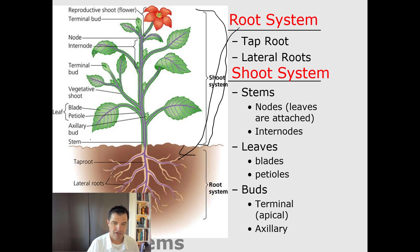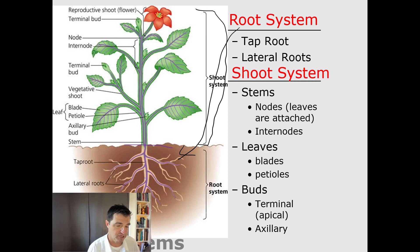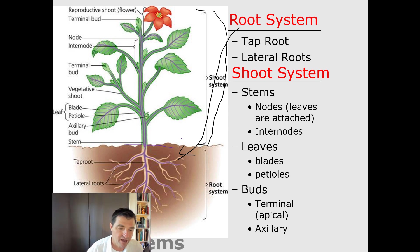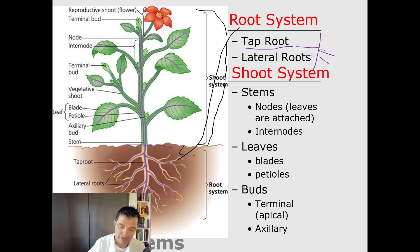The root system is usually what's below the ground, though that's not always true — orchids, for example, have aerial roots that are out of the ground. Sometimes there's a taproot where there's one long root with lateral roots off that. We'll talk about different plants that have different systems.